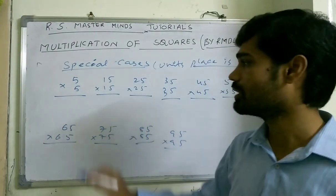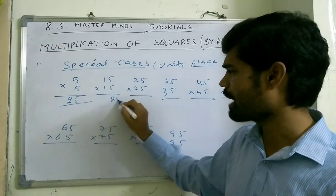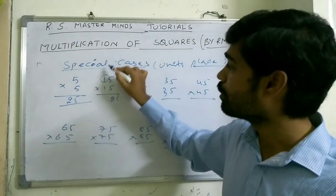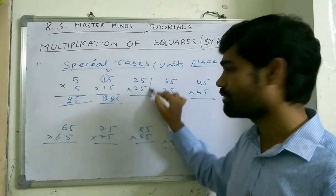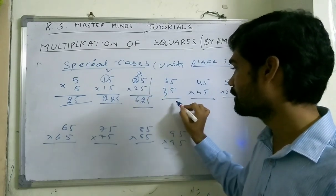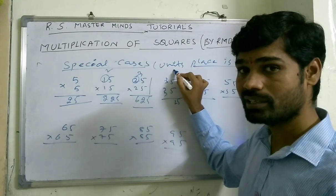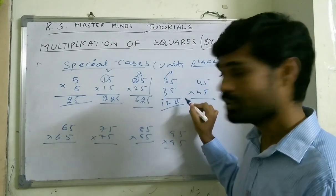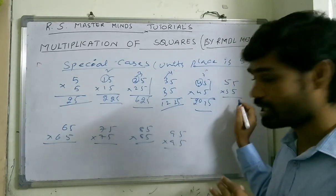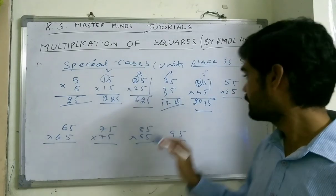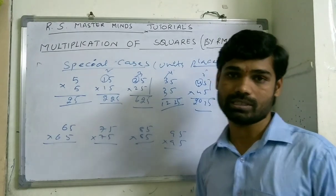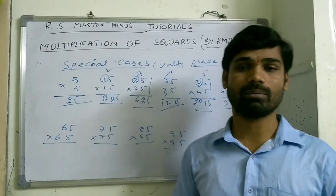For any number ending in 5, the last two digits of the square are always 25. For the remaining digits, take the tens digit and multiply it by the next number. For example: 15² — tens digit is 1, next number is 2, so 1×2=2, answer is 225. 25² — 2×3=6, answer is 625. 35² — 3×4=12, answer is 1225. 45² — 4×5=20, answer is 2025. 55² — 5×6=30, answer is 3025. This pattern continues for all such numbers.